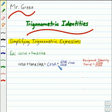If we get a common denominator and add these two expressions together, we get cosine squared of alpha plus sine squared of alpha all over cosine of alpha.